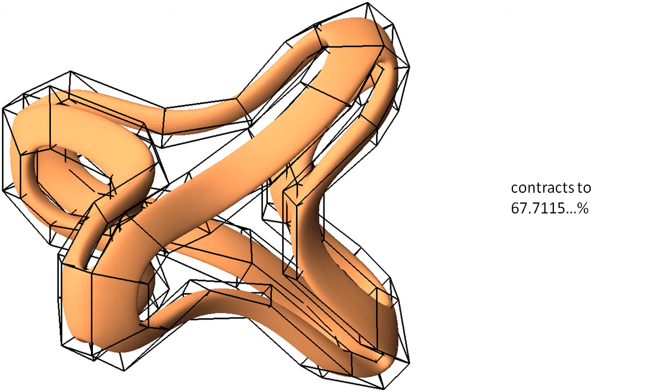Here is a more sophisticated design. Subdivision with Catmull-Clark contracts the volume to about 67% of the volume of the initial mesh.